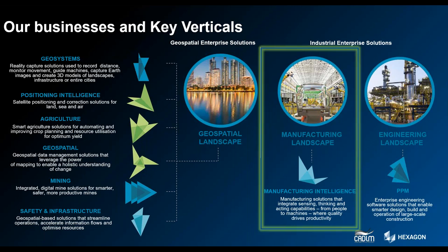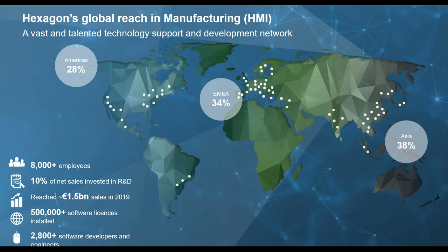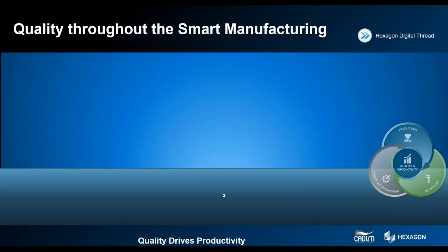Hexagon has three major divisions. The one I'm representing, which includes MSC Software — a company you might know — is now part of the manufacturing intelligence division, which is really focused on the manufacturing landscape. This division specifically is about 8,000 employees, about 1.5 billion in sales back in 2019, and more than 500,000 licenses installed. Our smart manufacturing vision is really connecting the dots between production, design, engineering, and metrology. By bringing those three major components together, we want to achieve better quality and productivity.